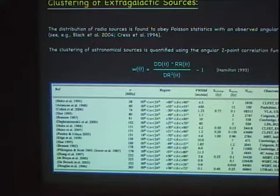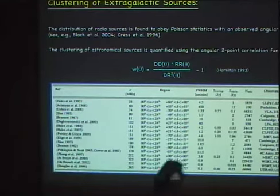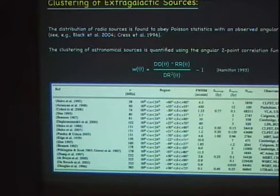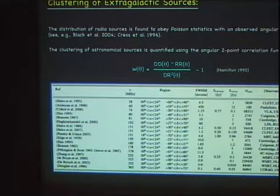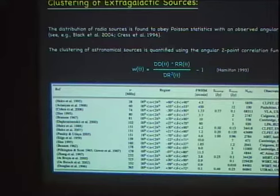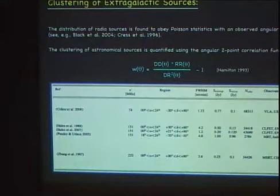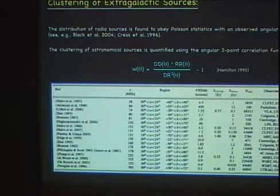We didn't have much information about point sources at the frequencies relevant for 21 centimeters, so we decided to first look at the clustering of point sources. We went to the literature and got a bunch of different surveys, and then we wanted to measure what we call the two-point angular correlation function W. This quantity tells you how much clustering you have. In order to do that, you need to have a catalog and you also need to make a fake catalog — a Poisson distribution — to compare against.